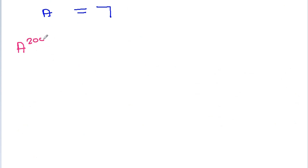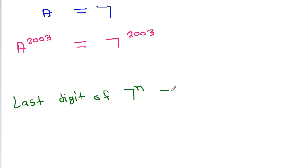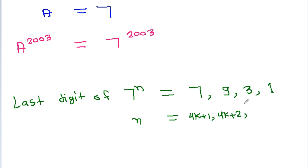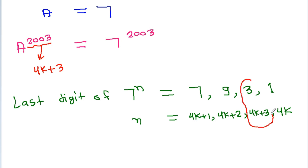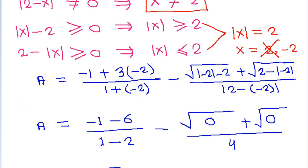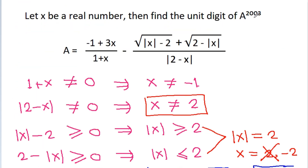So a to the power 2003 equals 7 to the power 2003. The last digit of 7^n is cyclic: it is 7 if n = 4k+1, it is 9 if n = 4k+2, it is 3 if n = 4k+3, and it is 1 if n = 4k. Since 2003 = 4×500 + 3, it is of the form 4k+3, so the unit digit of a to the power 2003 is 3.